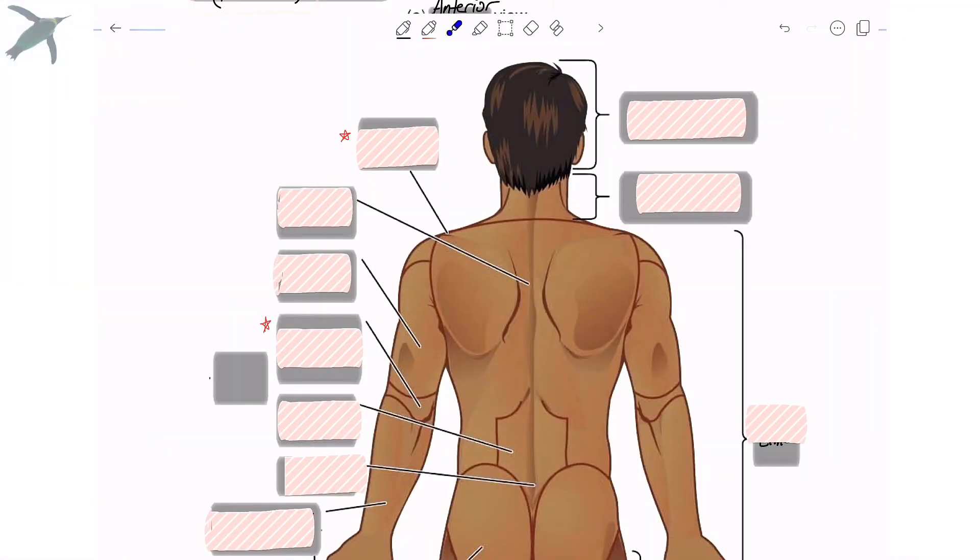All right, we made it to the posterior side. The highest point of the shoulder is the acromial region. If you feel around your shoulder blade in the back, you'll feel this bit that sticks out. That's the acromial process. So that is literally the highest point. The whole of the back we refer to as the dorsal region or the dorsal side, the back side.